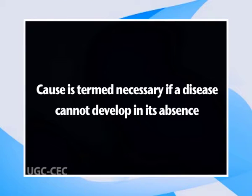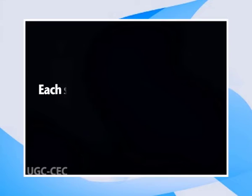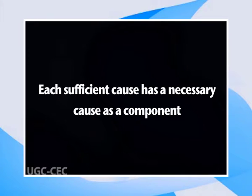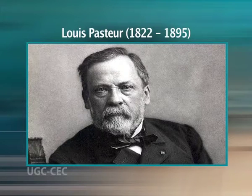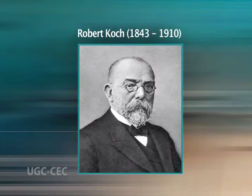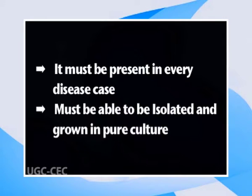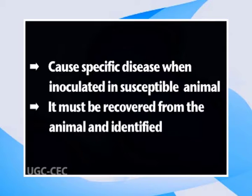A cause is termed necessary if a disease cannot develop in its absence. Each sufficient cause has a necessary cause as a component. Pasteur's work on microorganisms led to the formulation, first by Henle and then by Koch, of the following rules for determining whether a specific living organism causes a particular disease: it must be present in every disease case; it must be able to be isolated and grown in pure culture; it should cause the specific disease when inoculated in a susceptible animal; and it must be recovered from the animal and identified. A given disease can be caused by more than one causal mechanism, and every causal mechanism involves the joint action of a multitude of component causes.